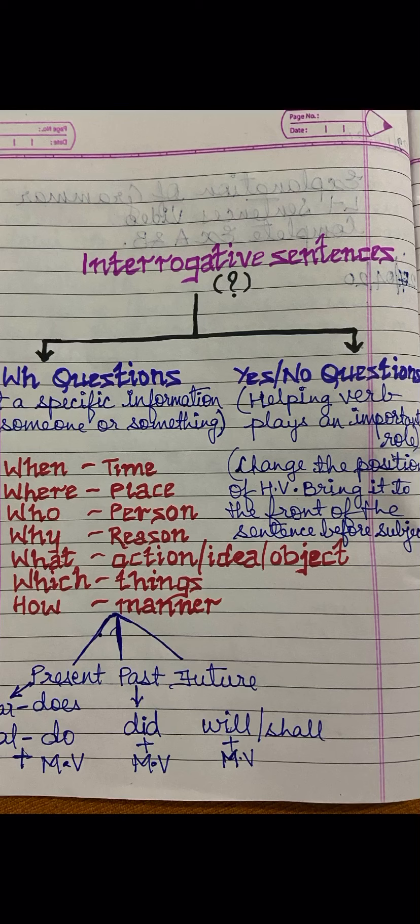Whenever the sentence is present tense and the subject is singular, you use DOES. Whenever the subject is plural in present tense, you use DO with the main verb. When the sentence is in past tense, whether the subject is singular or plural, you use DID. Remember: whenever you use DO, DOES, or DID, use the base form of the verb. You will understand why I am stressing on the base form when I show you the examples.